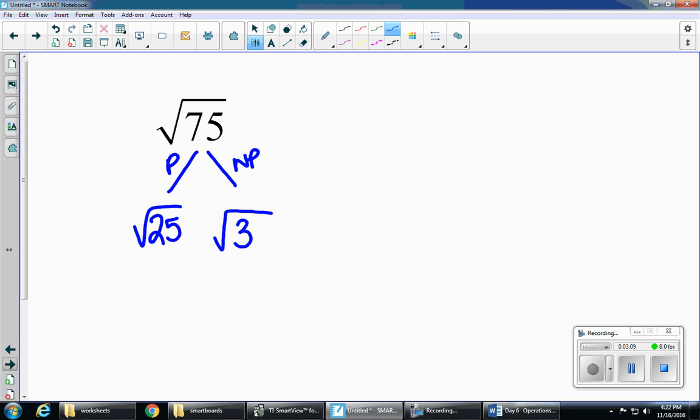The square root of 25 is 5. My 3 is my non-perfect, I can't square root it, so I'm gonna keep it. So radical 75 is the same thing as 5 radical 3.